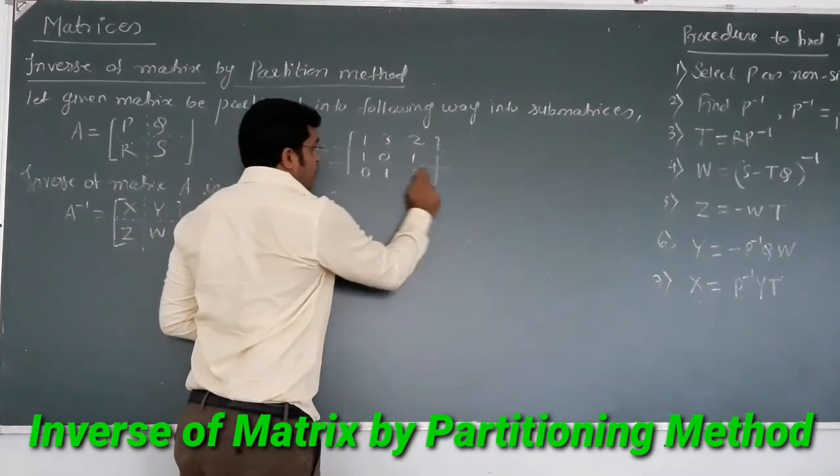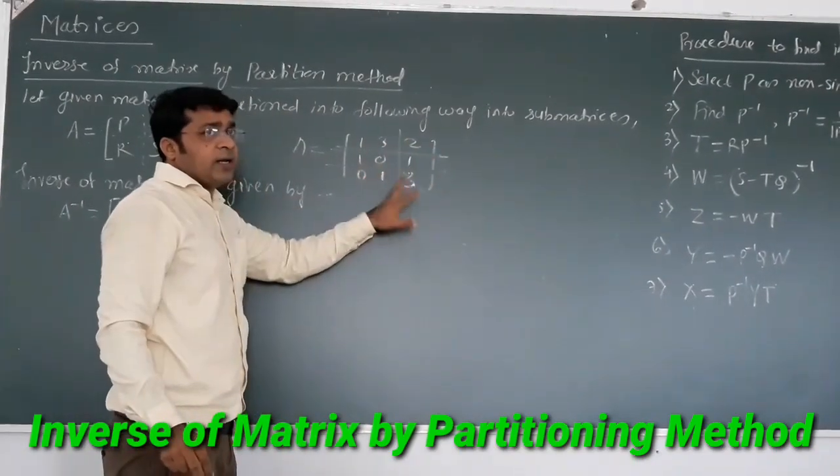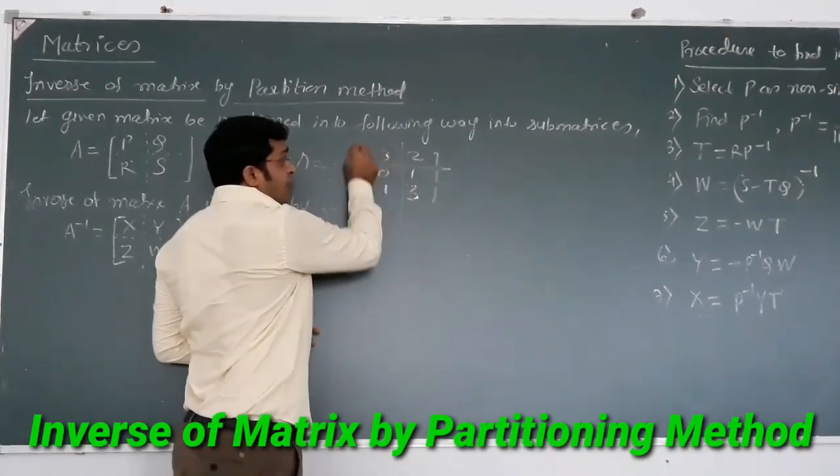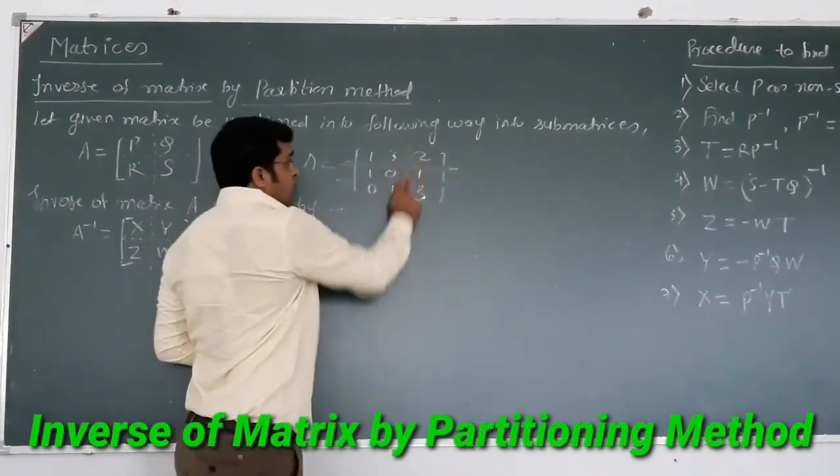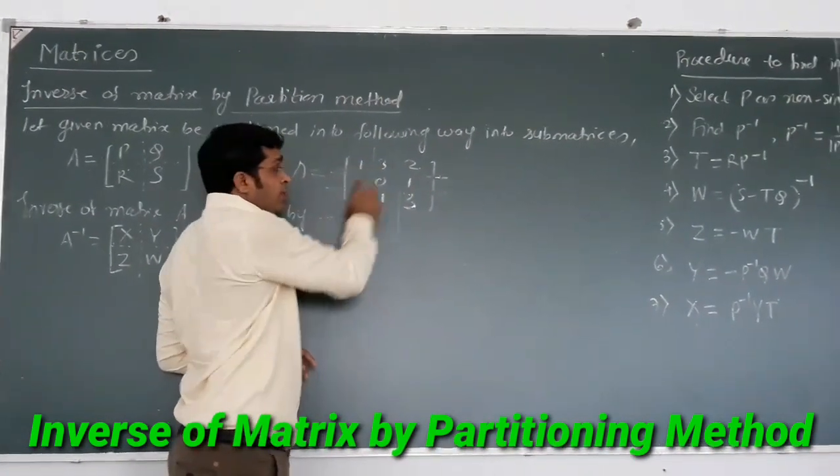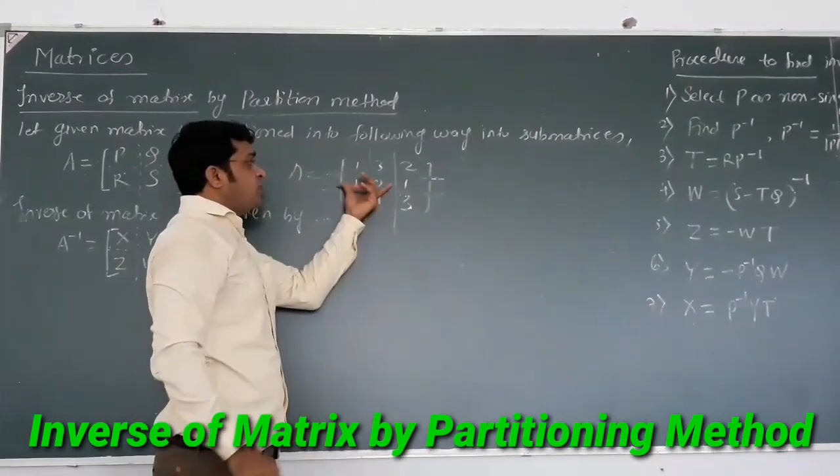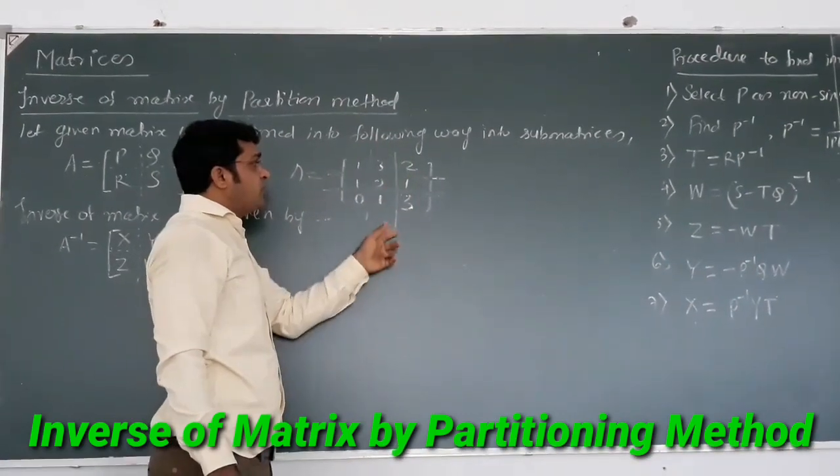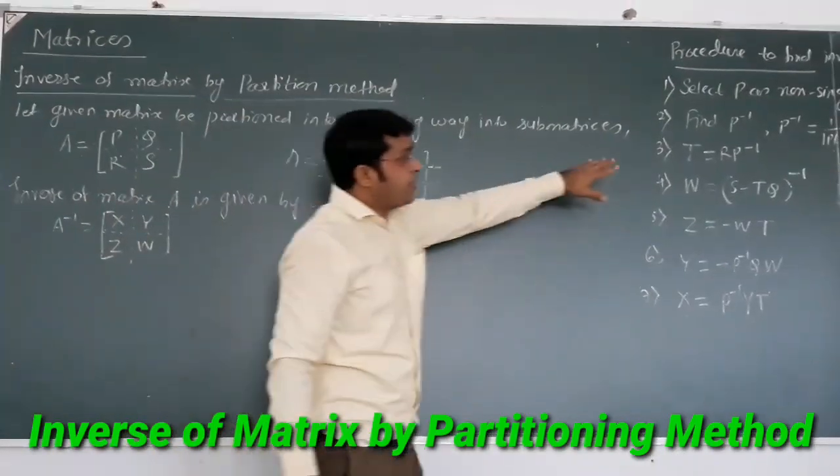One more way we are having of partitioning. This is P, Q, R, S. But this is not the right way. What we have to do? Whenever we partition, the first matrix should be a square matrix because we have to find out the inverse for that matrix.